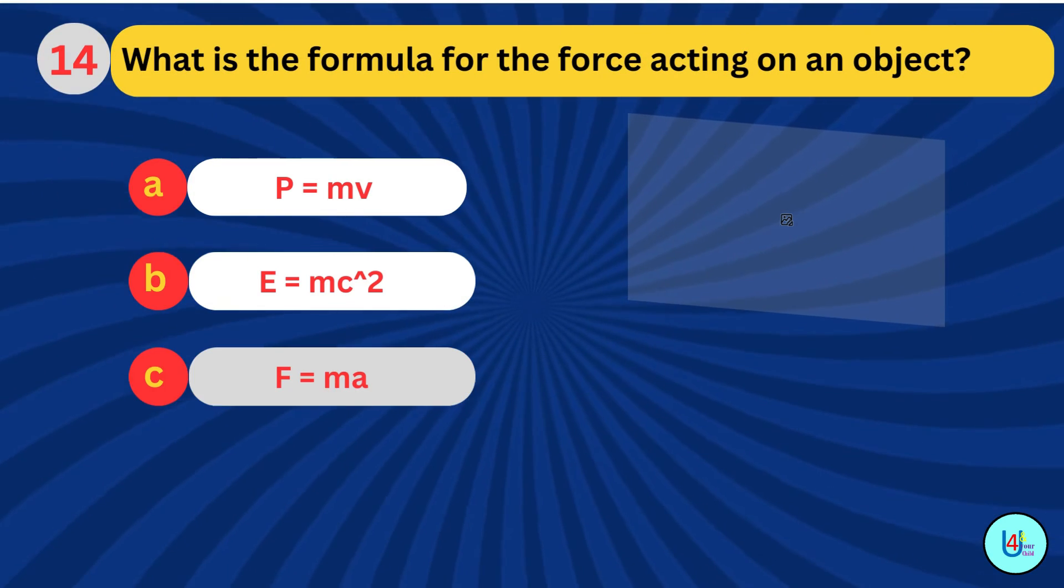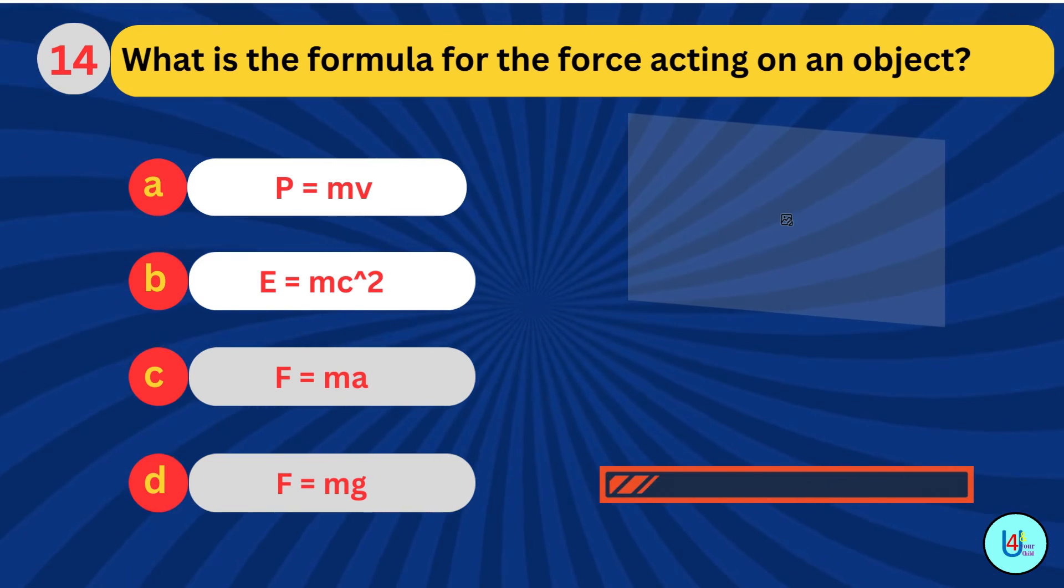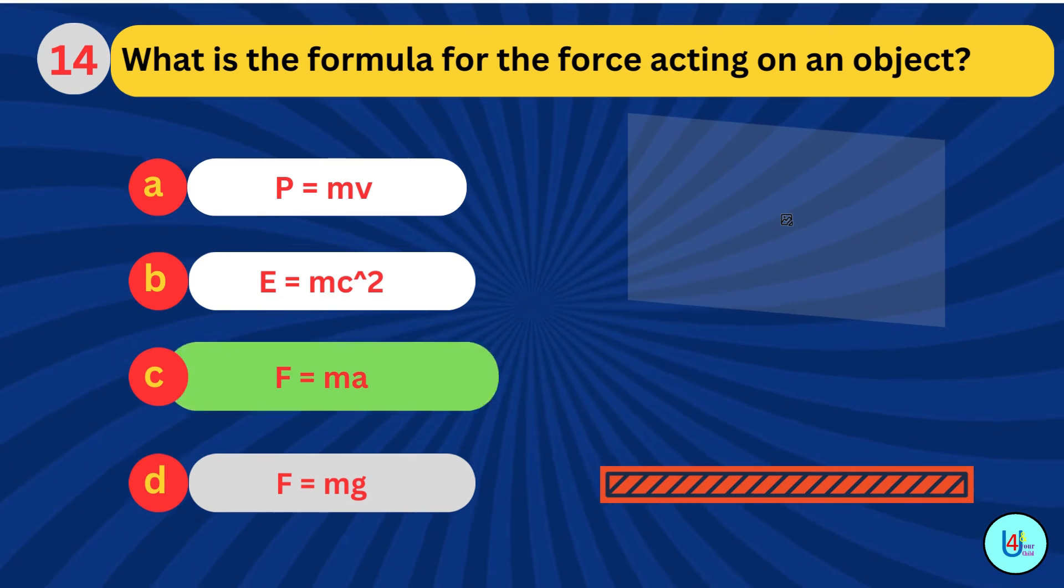What is the formula for the force acting on an object? F is equal to MA.